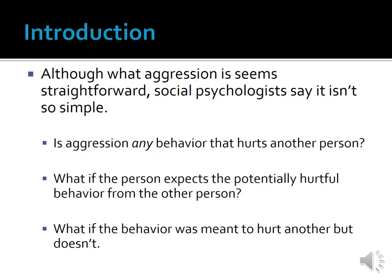For example, is aggression any behavior that hurts another person? If this is the case, then surgeons who perform heart surgery on a person who unfortunately dies on the operating table because of an operating error would be acting aggressively, since they performed actions that hurt another person. Also, what if a person expects the potentially hurtful behavior from the other person? A boxer that steps into a boxing ring knows the other boxer is going to hit him as hard as he can and try to knock him out. Is boxing then an example of aggressive behavior? Most social psychologists would say no. Boxing is not technically aggressive behavior — it is aggressive-like, but not aggressive behavior.